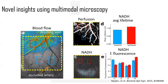Here's an image that illustrates the benefits of multimodal microscopy. Specifically, we're looking at the cortex of a mouse after an ischemic stroke has been induced by occluding an artery. This image, obtained by laser speckle contrast imaging, gives a nice illustration of the spatial heterogeneity of microvascular blood flow after the occlusion.